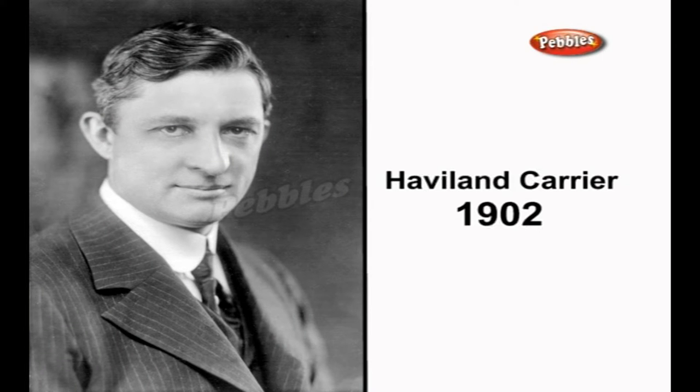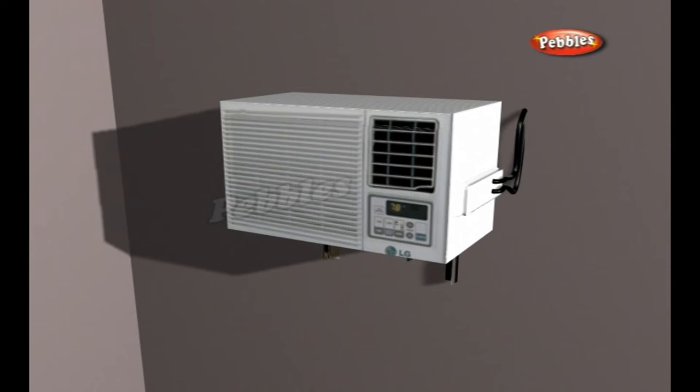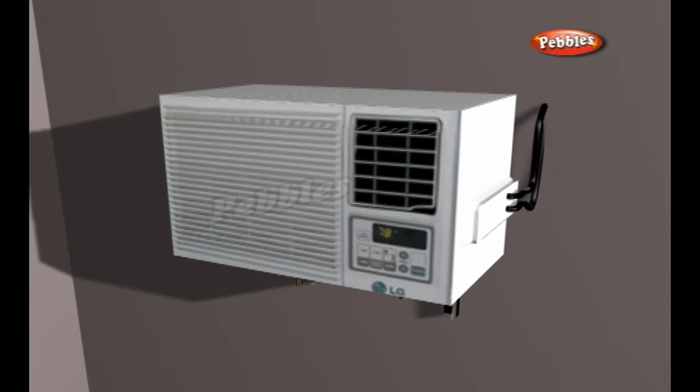In 1902, the first modern electrical air conditioning was invented by Willis Haviland Carrier in Syracuse, New York. All window air conditioners function pretty much the same, although energy savings and cooling capacity vary by brand and model.